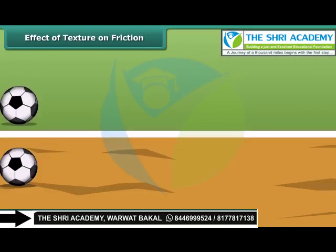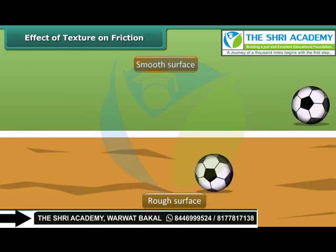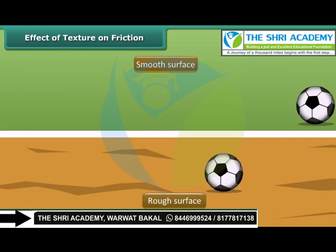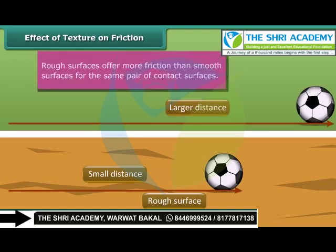A ball is rolled on a smooth surface and another similar ball on a rough surface. Both balls start rolling on different surfaces with the same speed, same force, and at the same time. But the ball rolling on the smooth surface travels a larger distance than the ball rolling on the rough surface. This shows that rough surfaces offer more friction than smooth surfaces, proving that friction depends on the texture of contact surfaces.